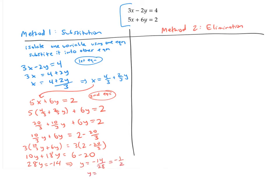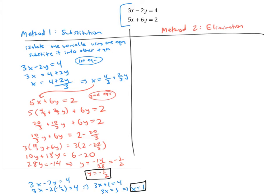Now I can go back and plug y into either equation to solve for x. Plugging negative one-half for y into the first equation gives me three x plus one equals four, so three x equals three, which means x equals one. I've solved the system: x equals one, y equals negative one-half, or as an ordered pair, (1, -1/2).